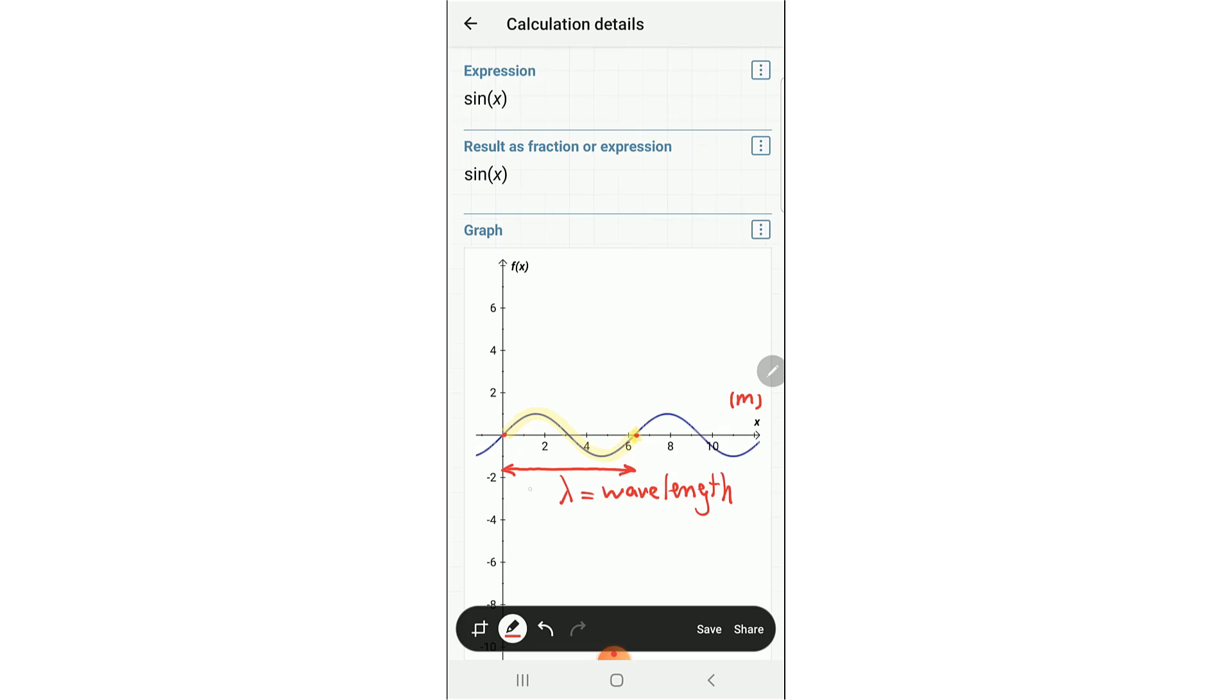And this is sine x. The function is sine x, and the wavelength is 2 pi. So you see how the wavelength is defined.